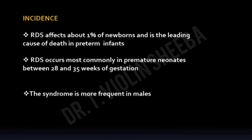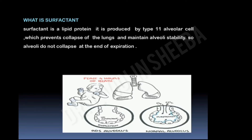Let us see why RDS is common in preterm babies. Preterm babies born before 35 weeks of gestation do not have enough surfactant in their lungs. Surfactant is a lipoprotein. It starts to be produced from 26 weeks of gestation by type 2 alveolar cells. The lungs produce enough surfactant around 37 weeks of gestation. The main function of surfactant is to lower the surface tension, which keeps the alveoli from collapsing — especially during expiration — so that breathing will be easy.